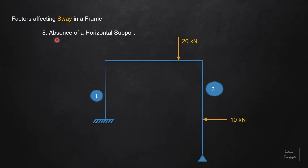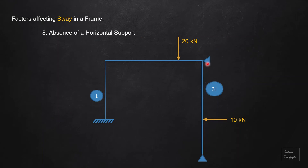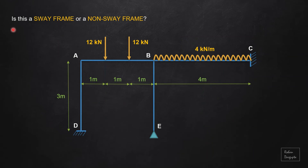Lastly, and very importantly, there must be an absence of a horizontal support. If there is a horizontal support, whatever the unsymmetry or other factors present, this support will not allow sway. So in order for a frame to sway, the frame must not have a horizontal support.